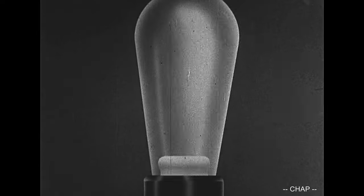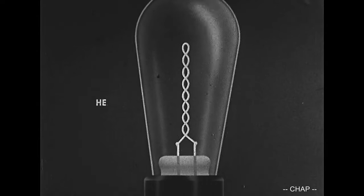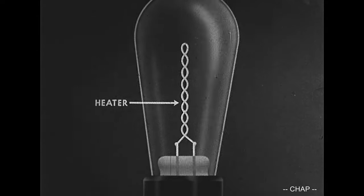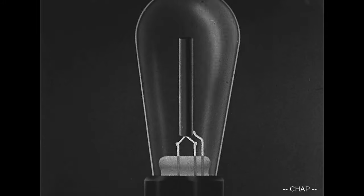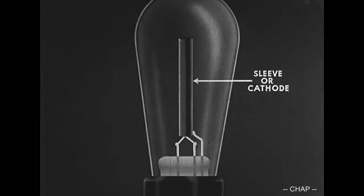Many modern tubes have an indirectly heated source of electrons. The heater, made of tungsten wire, is surrounded by a thin metal sleeve. This sleeve or cathode is coated with oxides of barium and strontium. When heated, it becomes the source of electrons in the tube.